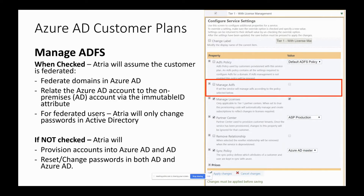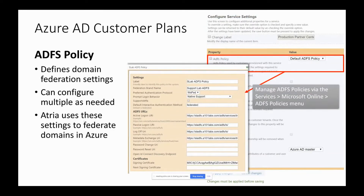Setting the immutable ID is something normally done by Azure AD Connect — we've replaced that function. Also, if a user is federated, Atria will only change passwords in Active Directory, since that's the primary password store. If the Manage ADFS option is not checked, Atria will provision accounts into Azure AD and Active Directory separately, and when you reset or change a password it will do so in both. The ADFS policy is where all of the settings that need to be set against a domain are stored. You need to carefully set these up to match your ADFS server. If you have multiple ADFS farms for different customers, you can configure these as needed. Atria uses these settings to federate the domains.